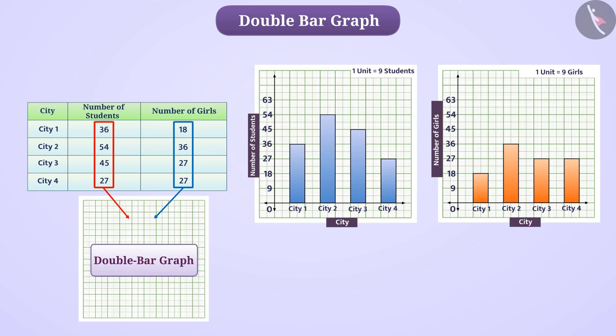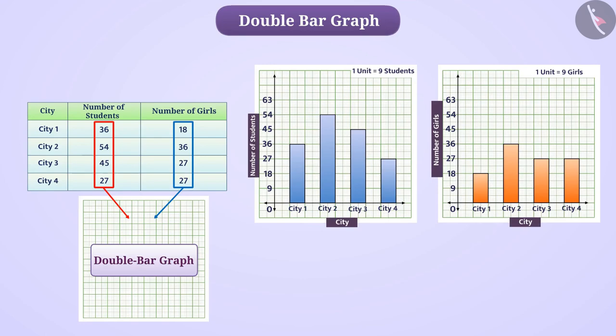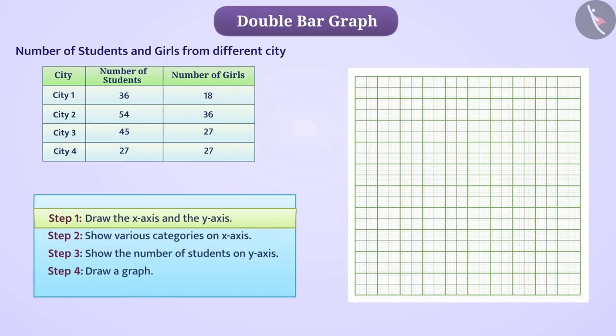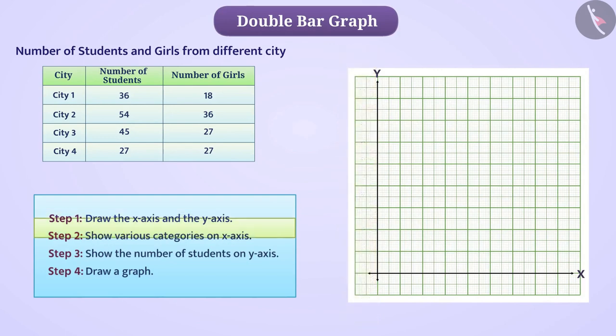Drawing a double bar graph is very similar to drawing a bar graph. First, we will draw the x-axis and the y-axis. Now we will show various categories on x-axis like here, name of cities.